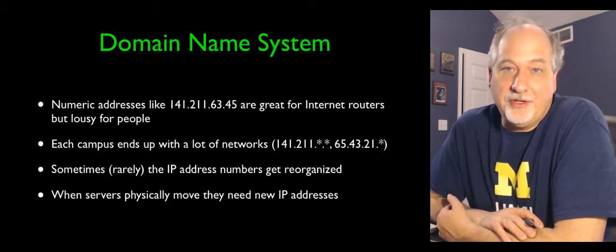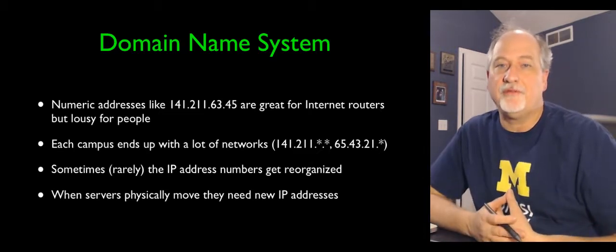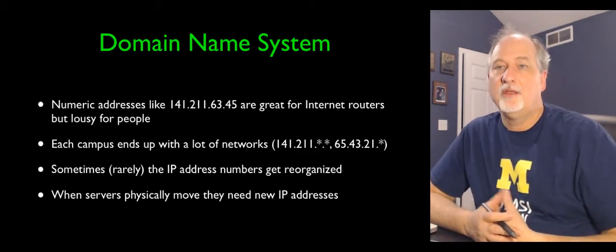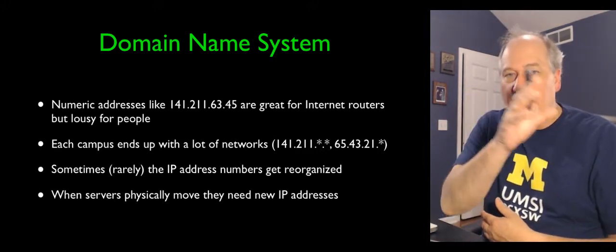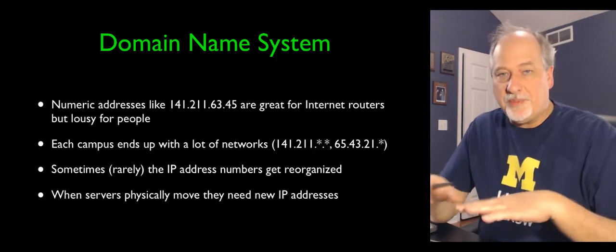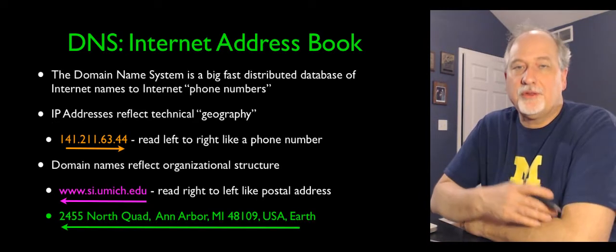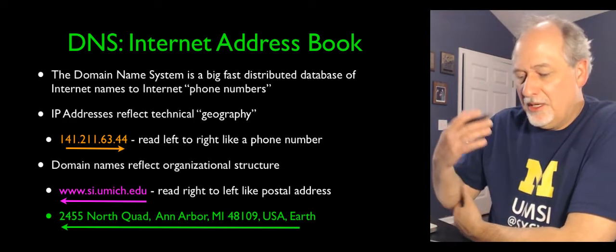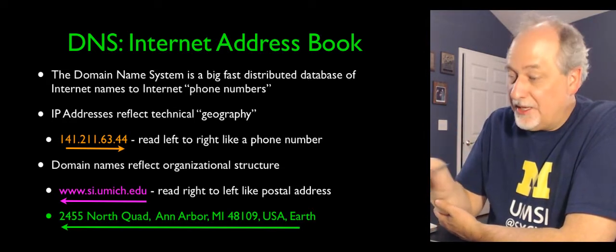You don't want people to know what these IP addresses are, so they invented this notion of a domain name system. The visible name, so we could switch the mapping from the name to the IP address transparently. The domain name system is like the Internet's address book. It's a big distributed database that's fast.